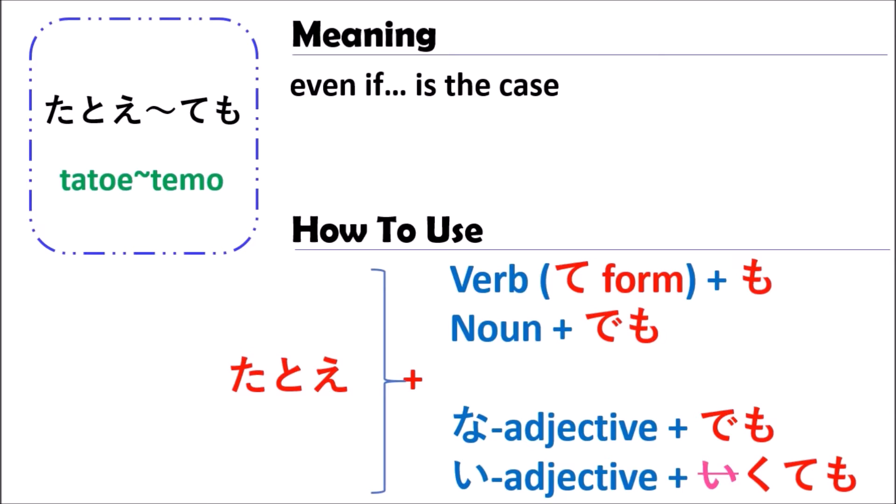And the last one is the i-adjective. When you use the i-adjective, you should cut out the い and follow by くても. For example, おいしい becomes おいしくても, something like this.